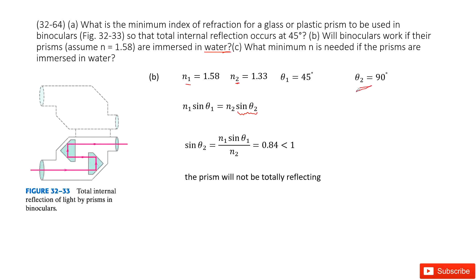We can do the calculation to see whether it is 90 degrees. After our calculation, sin theta 2 is 0.84, which is smaller than 1. So this is not 90 degrees, so this is not total reflection. The prism will not be totally reflecting.